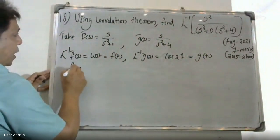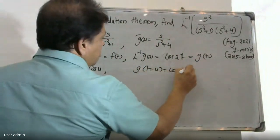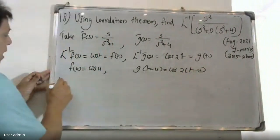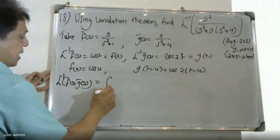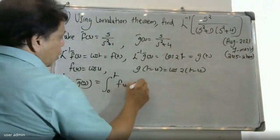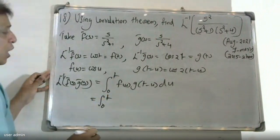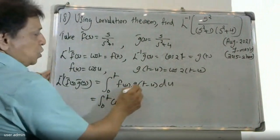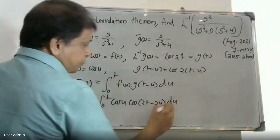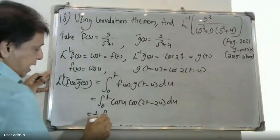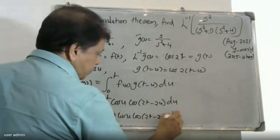By the convolution theorem, the inverse Laplace of F-bar times G-bar equals the convolution integral from 0 to t of f(u) times g(t minus u) du. That is, the integral from 0 to t of cos(u) times cos(2t minus 2u) du.